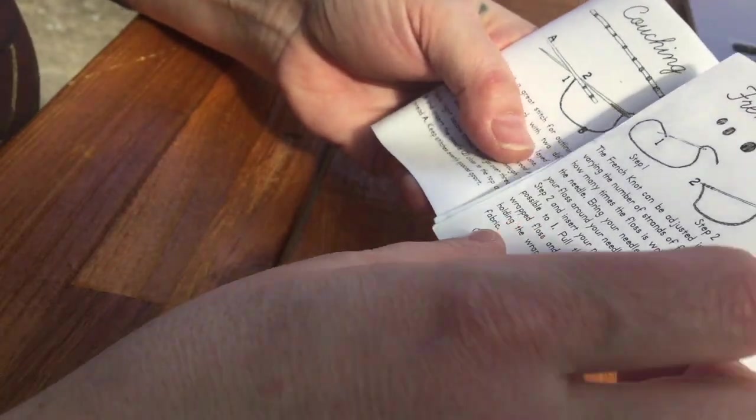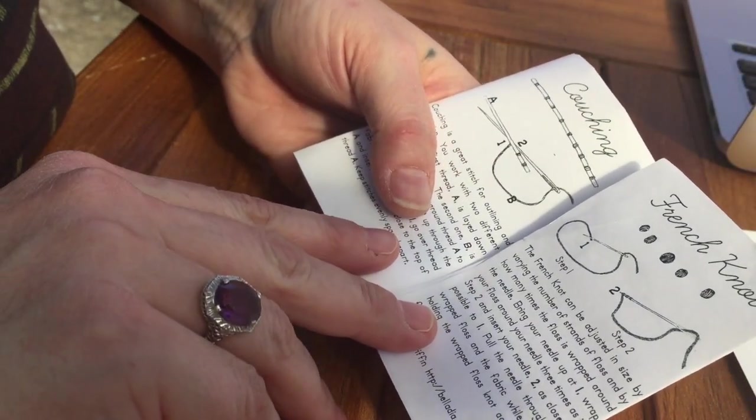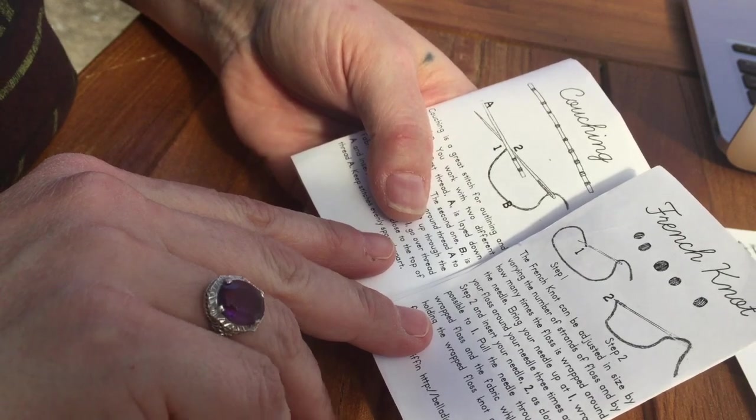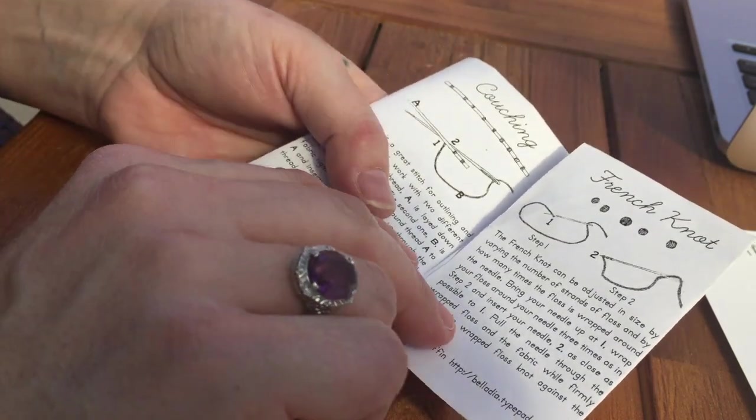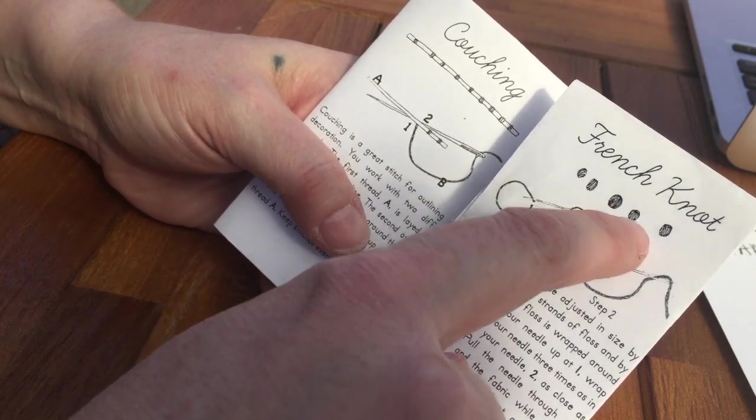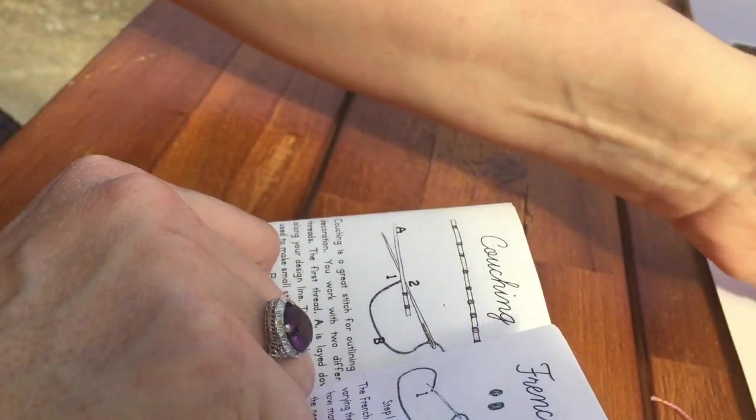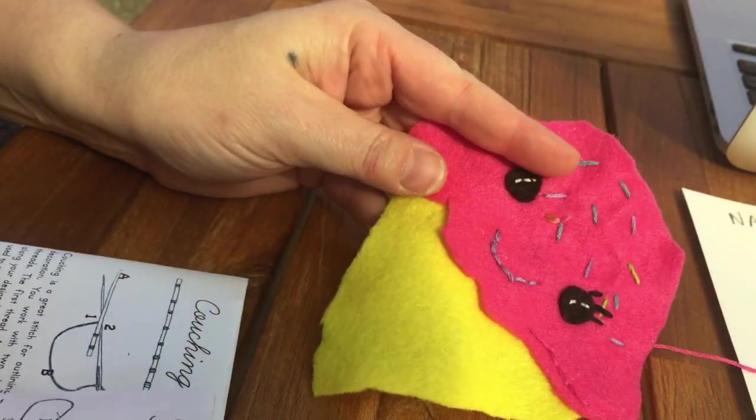A French knot can be adjusted by size depending on how many times you wrap the thread. French knots for what we're doing are really cool because you can make different sized little balls. Let's just say you were making something that looked like a cupcake or an ice cream cone.